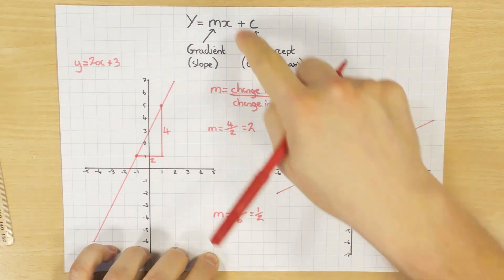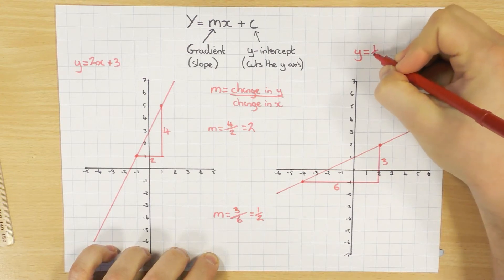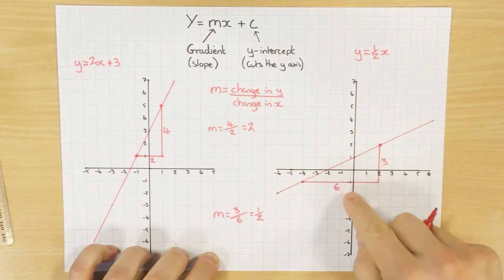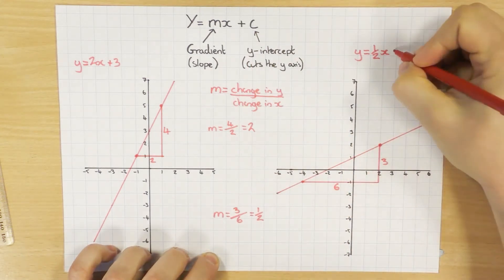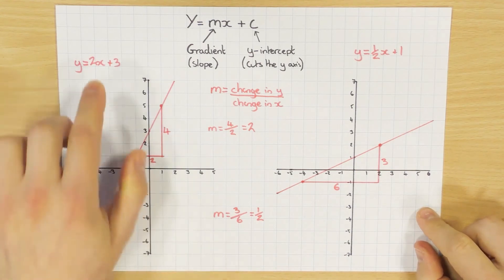Once you know the gradient, stick it in to the formula. y equals, and we worked out m to be a half, x. And then where does it cross the y-axis? It crosses there at 1. So plus 1. So there's two examples.